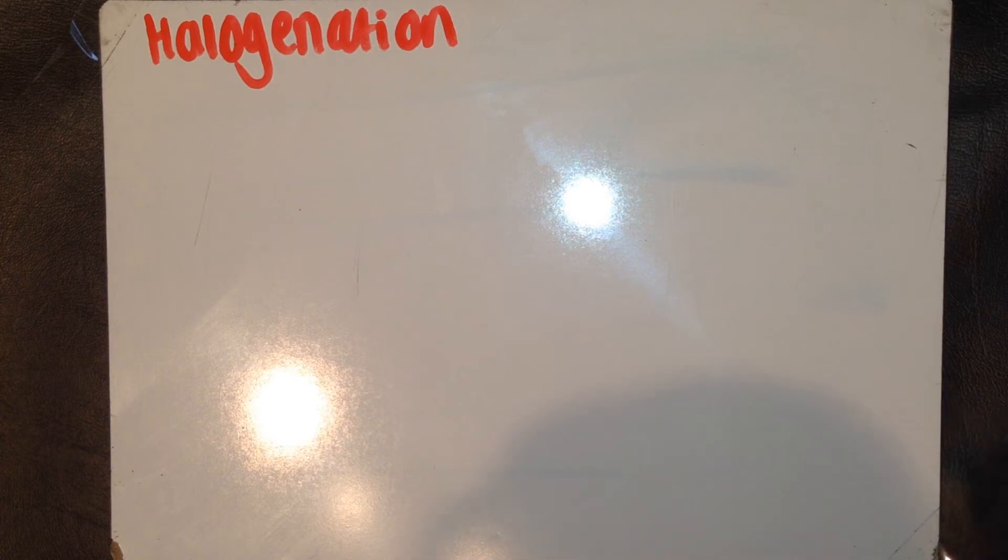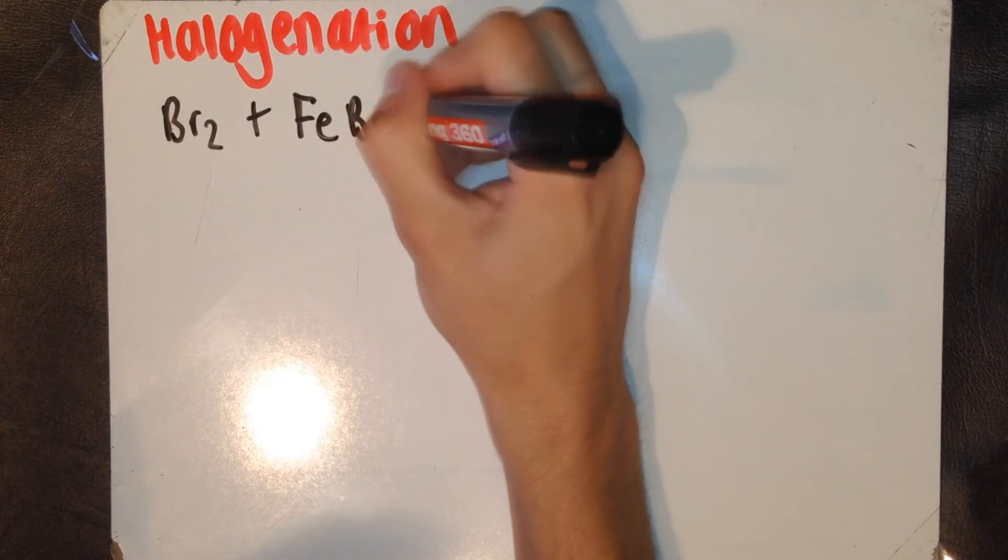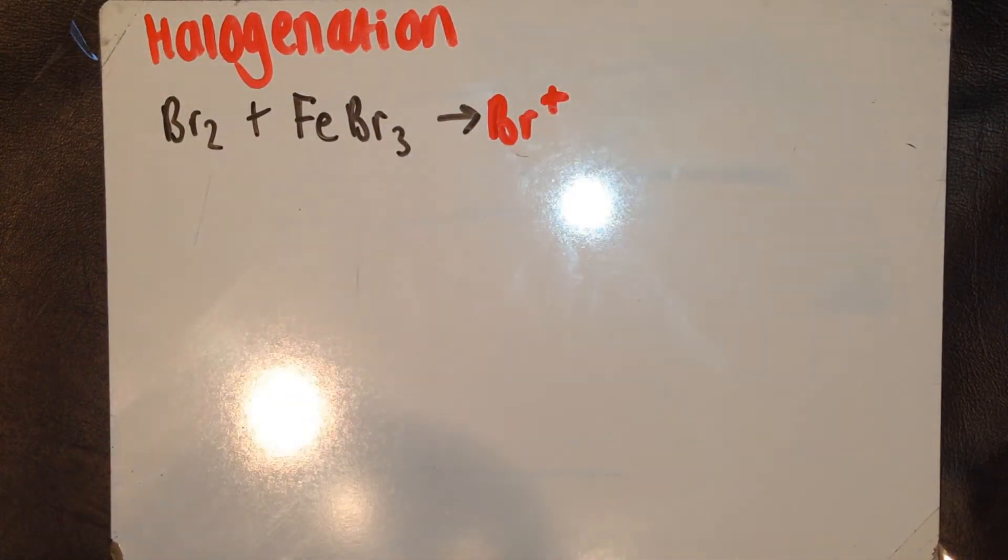Now, halogenation. For this example, I'm going to use bromine. So, first of all, bromine and iron-3 bromide react. This generates our electrophile, Br+. This also leaves us with FeBr4-.